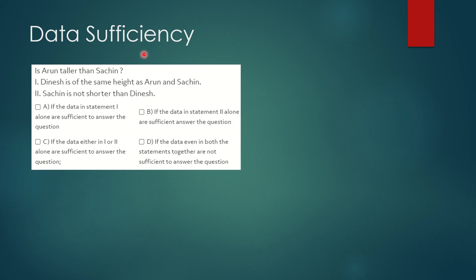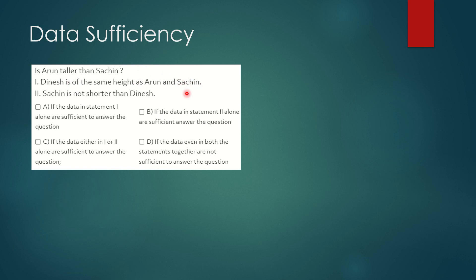The next question asks: is Arun taller than Sachin? Statement 1 says Dinesh is of the same height as Arun and Sachin. If Dinesh's height equals Arun's height and also equals Sachin's height, we can infer that Arun and Sachin both have the same height. So the answer to 'is Arun taller than Sachin?' is no — Arun is not taller than Sachin. Statement 1 alone is sufficient to answer the question.